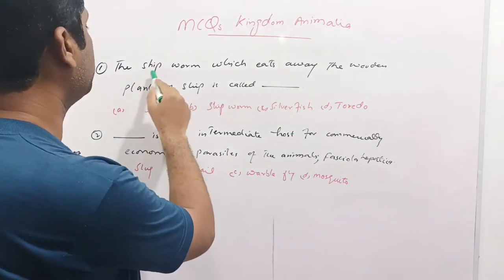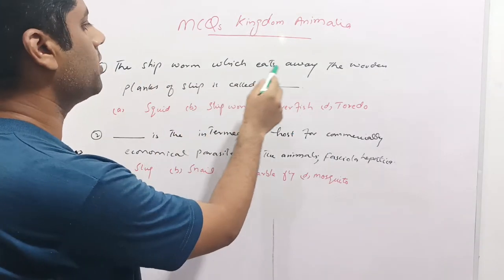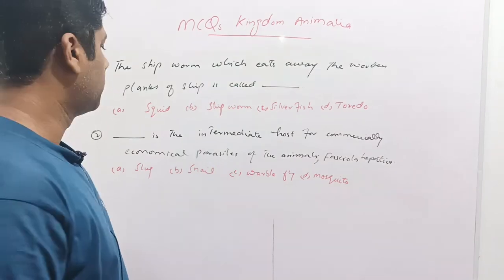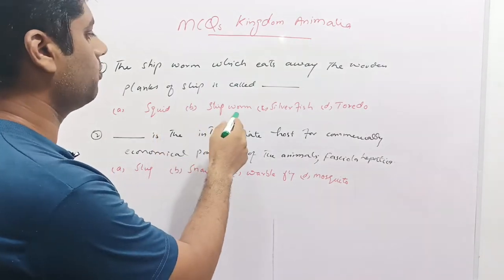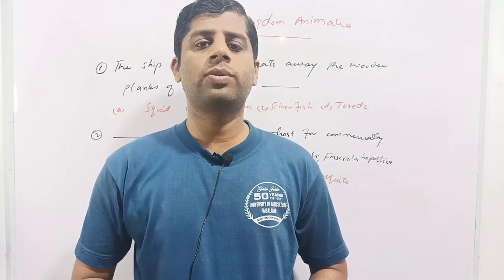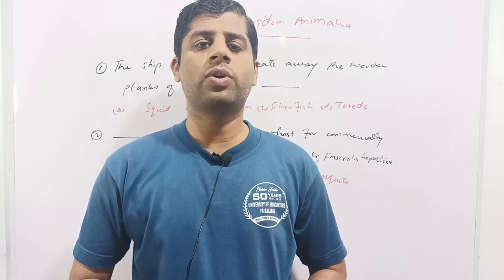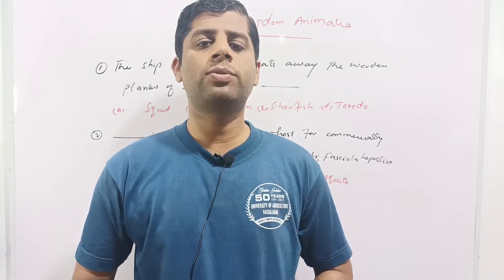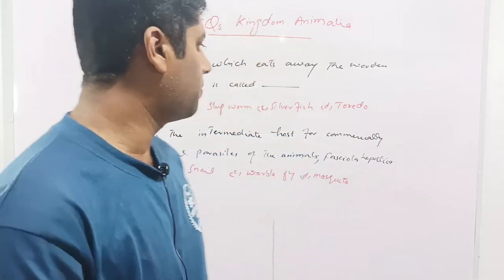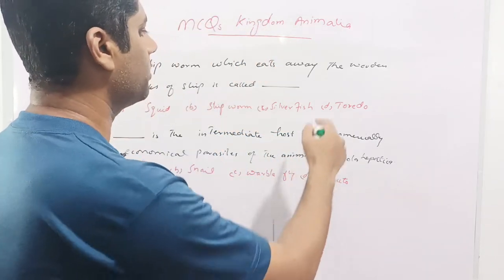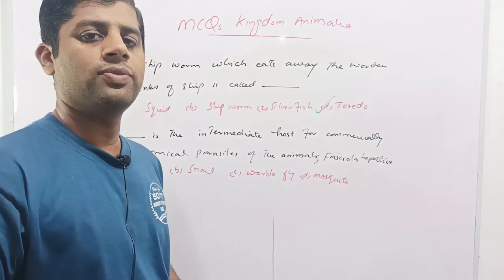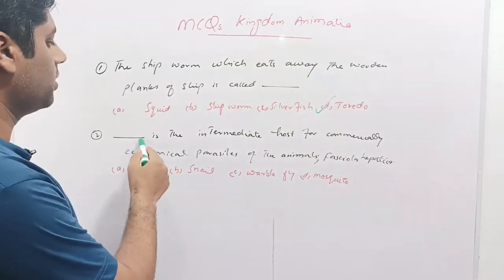The first question is: the shipworm which eats away the wooden planks of the ship is called. Given options are squid, shipworm, silverfish, or toredo. There are some worms which eat away the wooden planks of the ship in the water. These worms belong to the phylum Mollusca and are called toredo. So option D is correct.